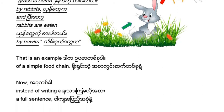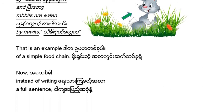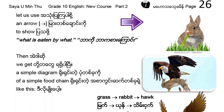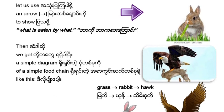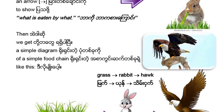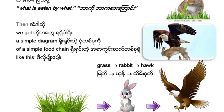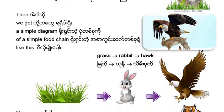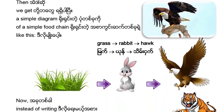Now, instead of writing a full sentence, let us use an arrow to show what is eaten by what. Then we get a simple diagram of a simple food chain, like this: grass → rabbit → hawk.